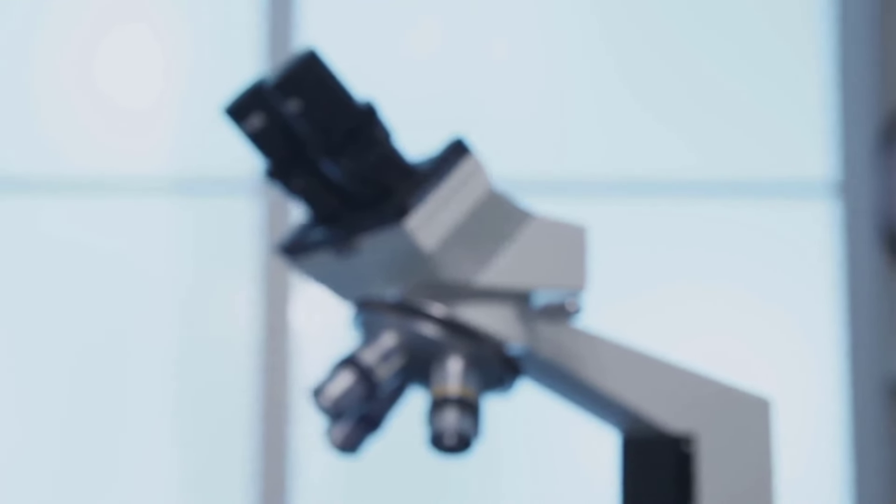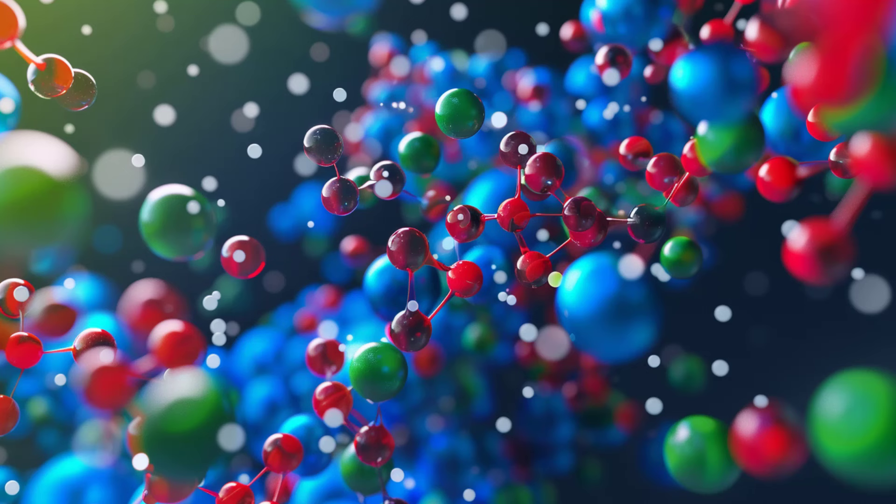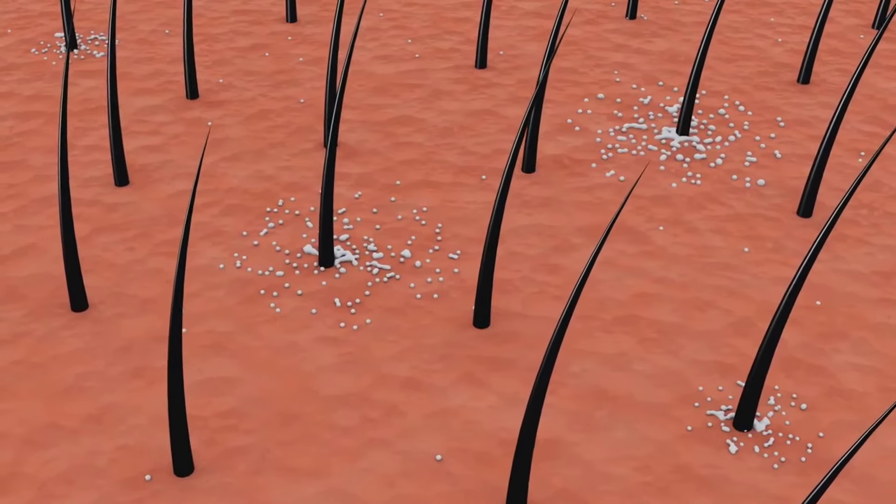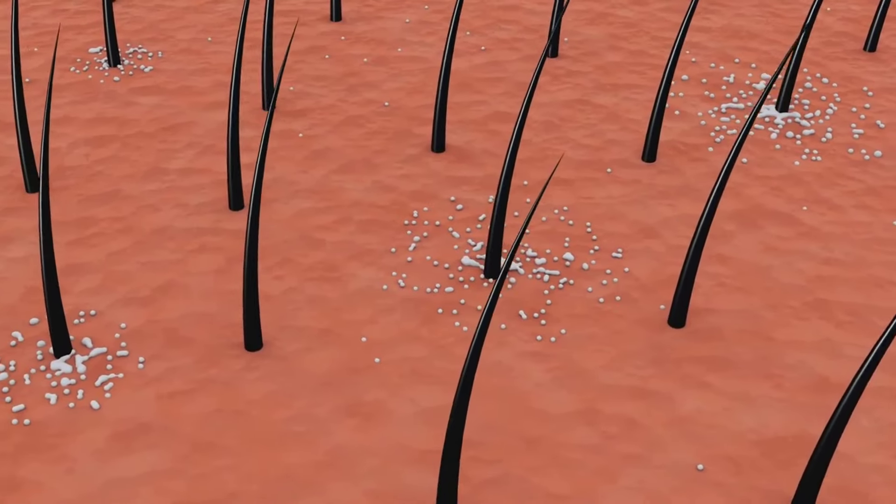So what exactly are these nanoparticles we're talking about? Well, the term nanoparticle might sound like something out of a science fiction novel, but it's very much a part of our reality. Nanoparticles are tiny particles that measure less than 100 nanometers in size. To give you an idea of how small that is, a human hair is about 80,000 nanometers in diameter.